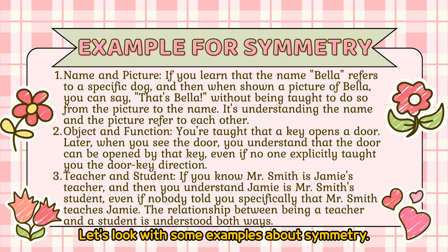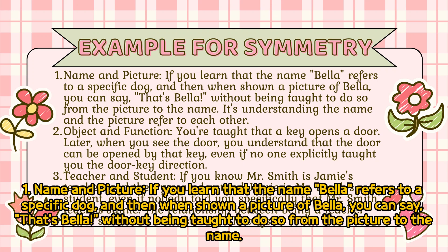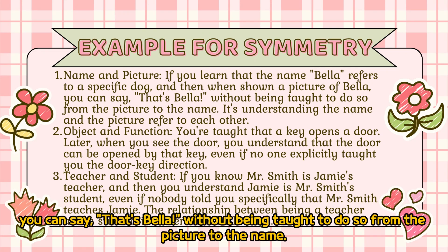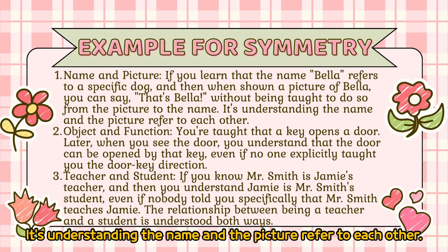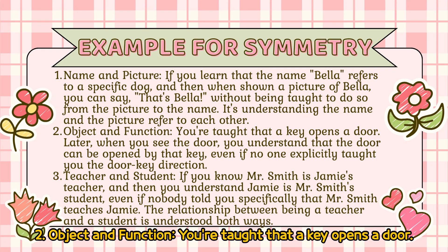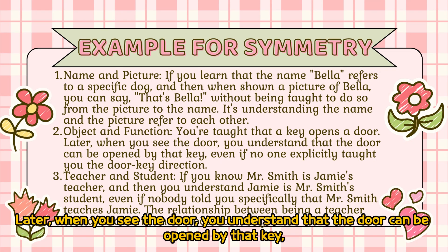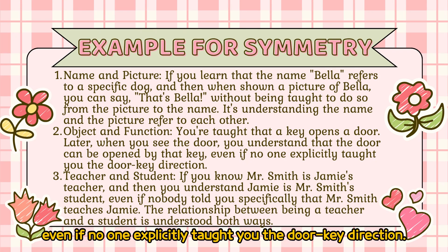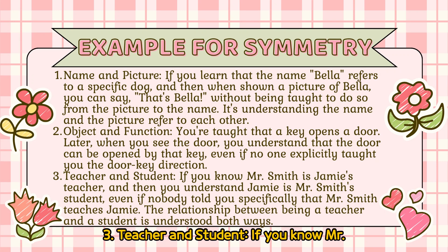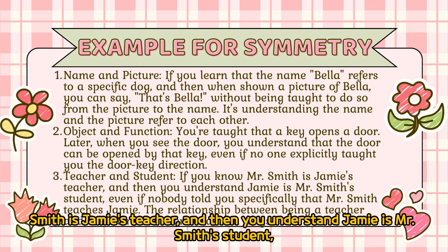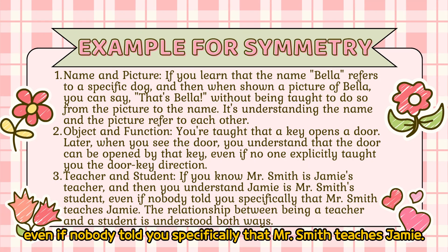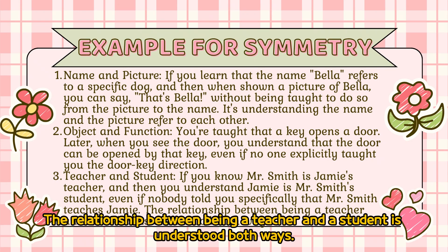Let's look at some examples of symmetry. 1. Name and picture — if you learn that the name 'Bella' refers to a specific dog, and then when shown a picture of Bella you can say 'that's Bella' without being taught to do so from the picture to the name, that's understanding the name and picture refer to each other. 2. Object and function — you're taught that a key opens a door; later, you understand the door can be opened by that key, even if no one explicitly taught you the door-to-key direction. 3. Teacher and student — if you know Mr. Smith is Jamie's teacher, you understand Jamie is Mr. Smith's student, even if nobody told you specifically. The relationship is understood both ways.